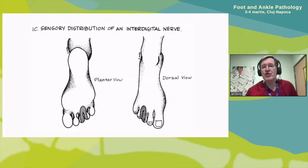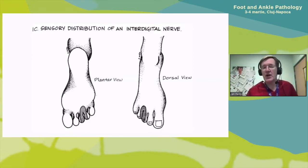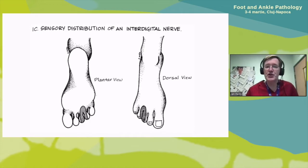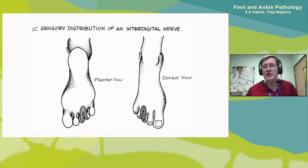The sensory distribution — when a proper digital nerve splits and goes to either side of a toe and becomes the common digital nerves — typically affects the third and fourth interspace. If I'm being a pedant, a Morton's neuroma only affects the third-fourth interspace, and that's the point where you'll get the sensory distribution and where patients will complain of pain.